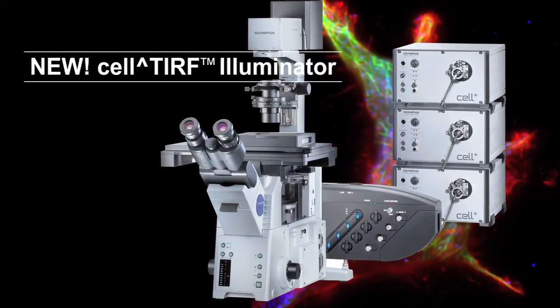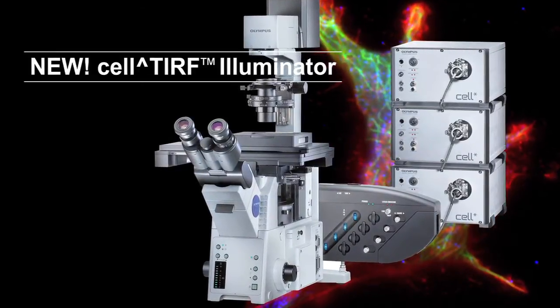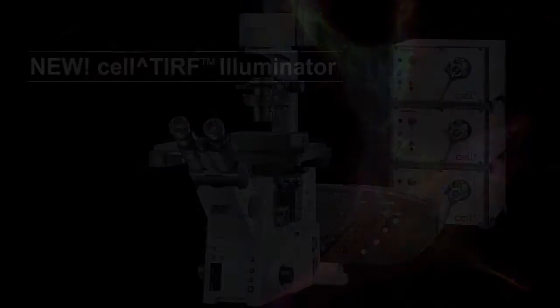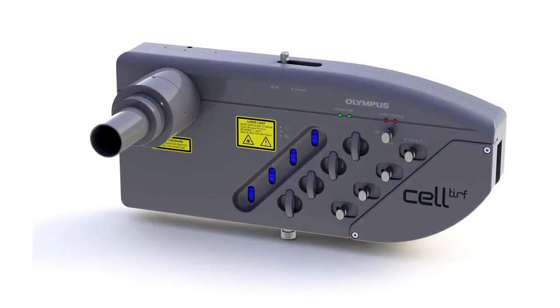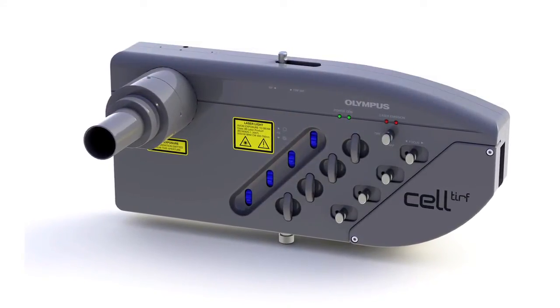So Stuart, you're here to introduce the motorized cell TIRF illuminator. So maybe you could talk a little bit about TIRF and then discuss how the illuminator fits into the new Olympus product line. Yeah, absolutely. So Olympus is actually the pioneer of objective-based TIRF microscopy. We introduced our first system back in 1997, and this system actually now represents our fifth generation of illuminator.